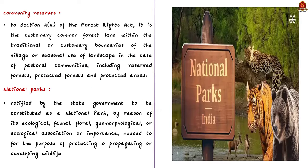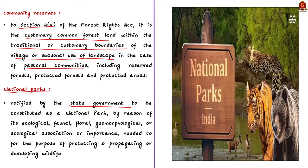Community forest resource, as per Section 2 of the Forest Rights Act, is the customary common forest land within traditional or customary boundaries of a village or seasonal use landscape — including reserve forests and protected areas such as sanctuaries and national parks — to which the community had traditional access. National parks are notified by state governments on ecological, faunal, floral, geomorphological, or zoological grounds for protecting and propagating wildlife. No human activity is permitted inside a national park except those permitted by the Chief Wildlife Warden. There are 106 existing national parks in India covering 44,402.95 sq. km.